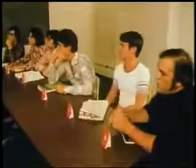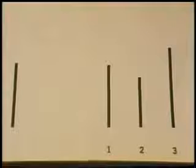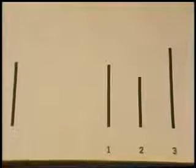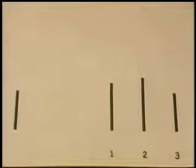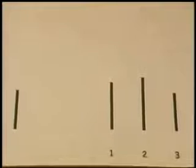The experiment you'll be taking part in today involves the perception of lengths of lines. As you can see here, I have a number of cards, and on each card there are several lines. Your task is a very simple one. You're to look at the line on the left and determine which of the three lines on the right is equal to it in length. All right, we'll proceed in this order.